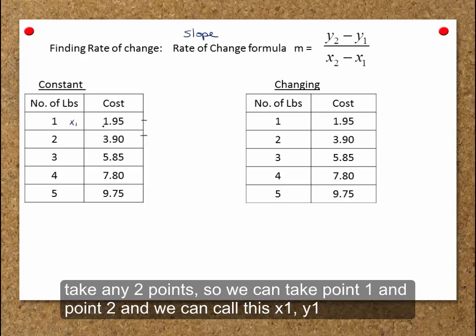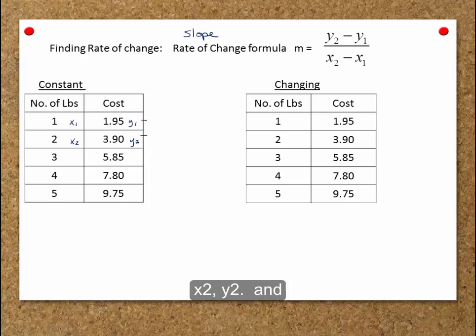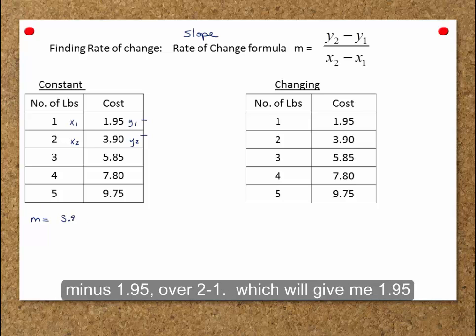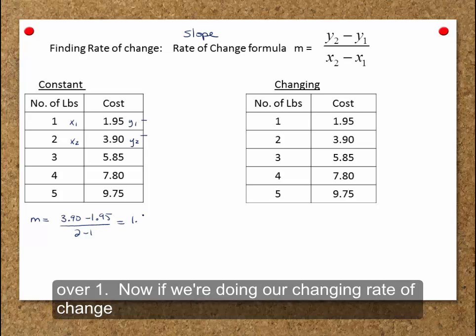So we can take point 1 and point 2, and we can call this x1, y1, x2, y2. And our change is going to be 390 minus $1.95 over 2 minus 1, which will give me $1.95 over 1.